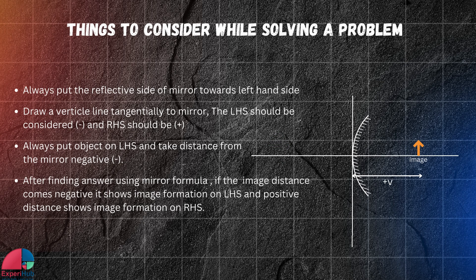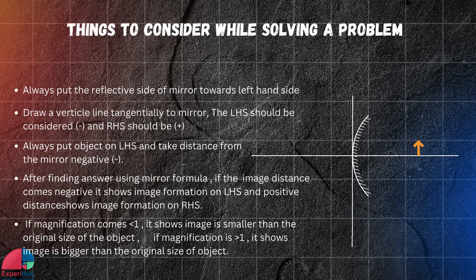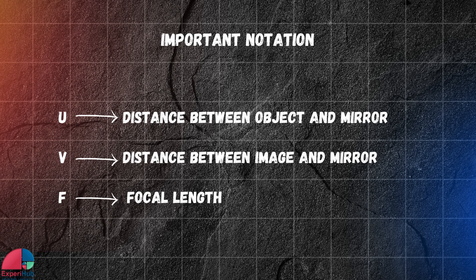After finding the answer using the mirror formula, which we'll discuss further in this video, if the image distance comes out negative, it shows image formation on the left-hand side, and a positive distance shows image formation on the right-hand side. If magnification is less than one, the image is smaller than the original object. If magnification is greater than one, the image is bigger than the original object. Some important notations to keep in mind.